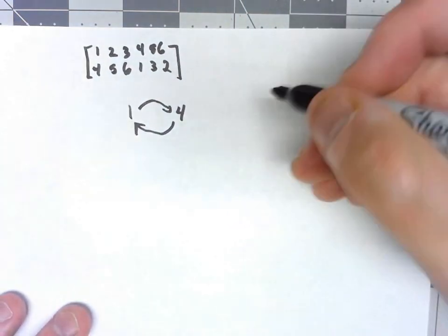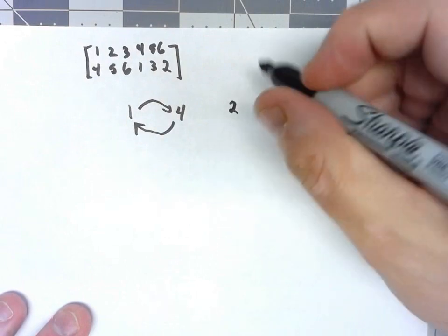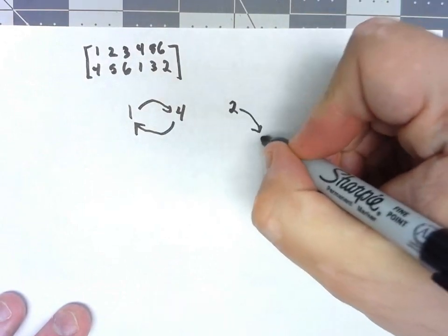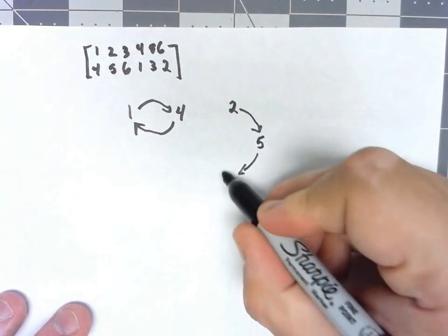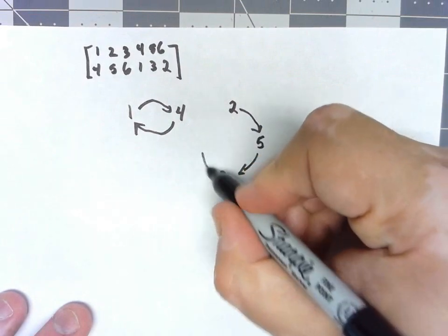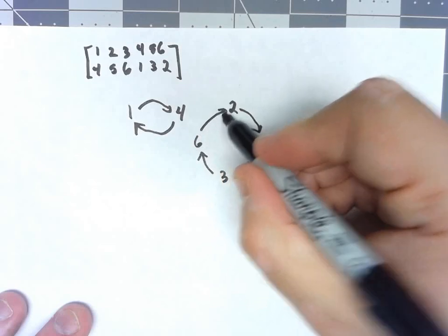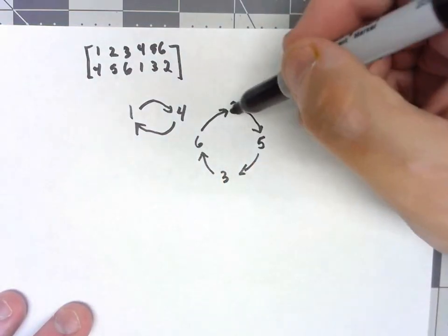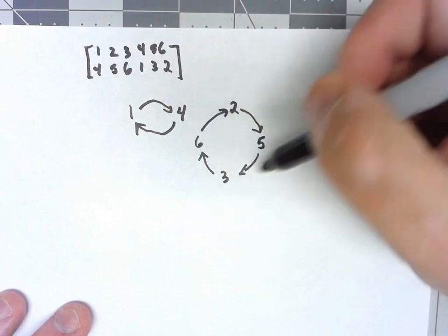Similarly, we've got another cycle. It's a longer cycle, but if I start at 2, 2 goes to 5, 5 goes to 3, 3 goes to 6, and 6 goes back to 2. Again, you're always just going to be cycling around these four numbers.